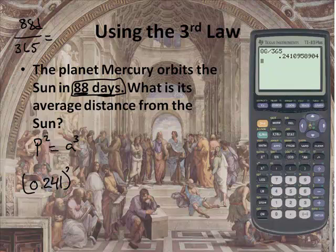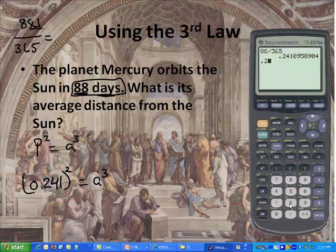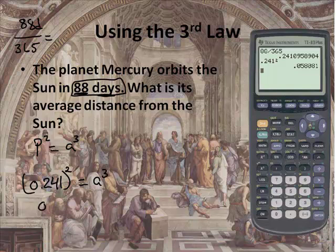That's the percentage — 24% of the Earth — and that's equal to A cubed. Now I want to find what A is. To do that, I'm going to take 0.241 and square it. What I get on my calculator is 0.0581, which equals A cubed.